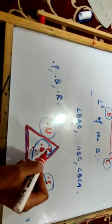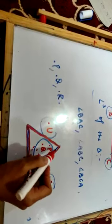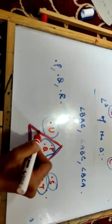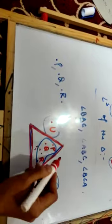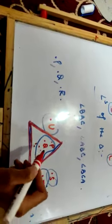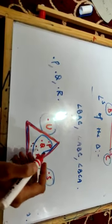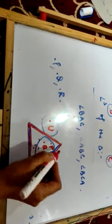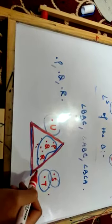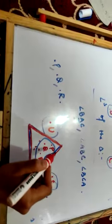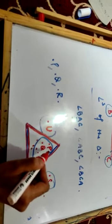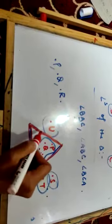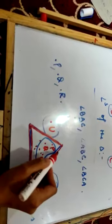Now let's see what the triangle is. This is the boundary of the triangle. This region is the interior region along with the boundary of the triangle — we call this the triangular region. The triangular region is the interior region along with the boundary of a triangle.